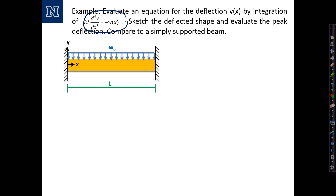Yet by integrating the fourth-order beam equation, we can solve for the shear force, the bending moment, and the deflection all along the beam. I also find it useful to compare the result to a simply supported beam. By doing so, we'll develop some good intuition about the effects of fixity on both the bending moment and the peak deflection in the beam.